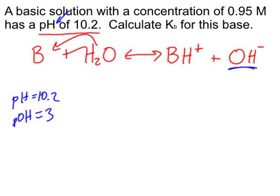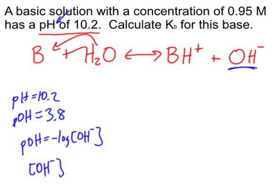And just as the pH is the negative log of H plus, the pOH is defined as the negative log of OH minus, which means if we rearrange this algebraically, OH minus is 10 to the negative pOH.